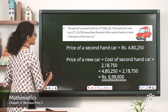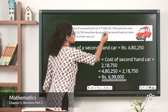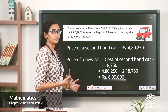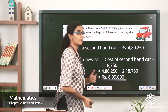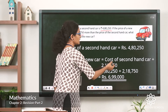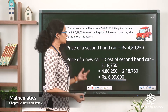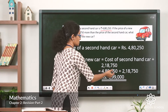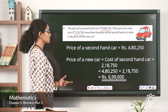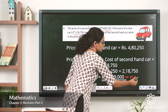From the question, the price of the second-hand car is rupees 4,80,250. The price of the new car will be that amount plus rupees 2,18,750. So the price of the new car equals the cost of the second-hand car plus the additional amount. Substituting the values gives us a sum of rupees 6,99,000, which is the price of the new car.